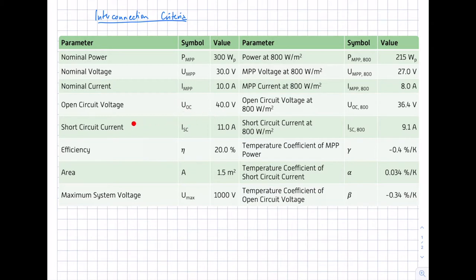You also need the open circuit voltage UOC of 40 volts and the short circuit current ISC of 11 amperes. Assuming a module area of 1.5 square meters, we get an efficiency of 20%. Feel free to pause the video and verify whether this efficiency value is correct.